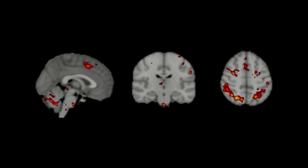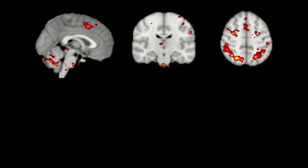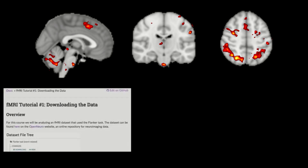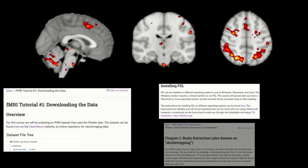At this point in the series, we're going to be using our Unix commands with fMRI data. Click on the link in the more info box below for instructions about how to download the data, how to install FSL, and what skull stripping is. When you've finished, come back to this tutorial.